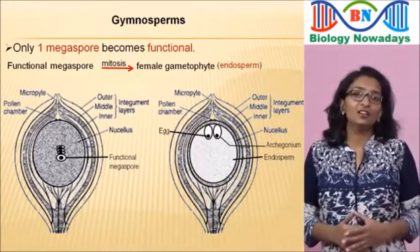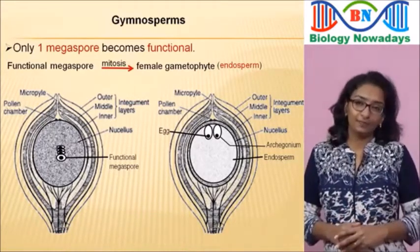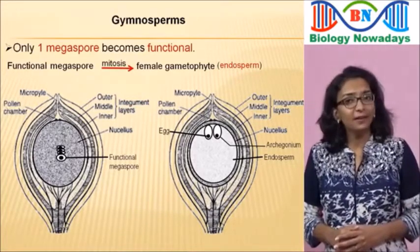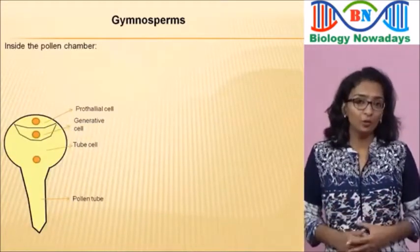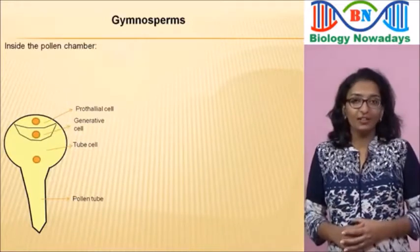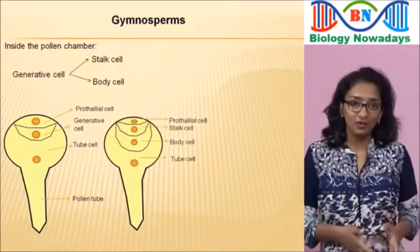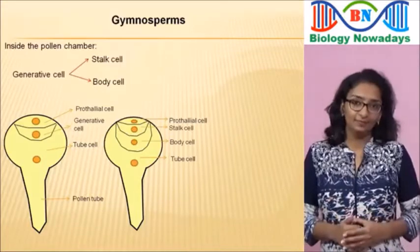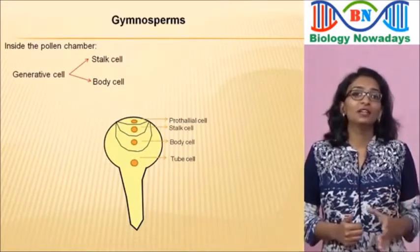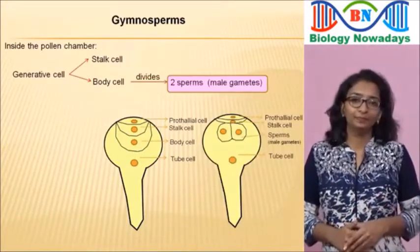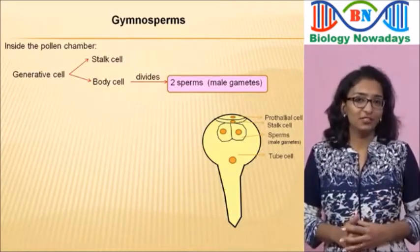Sometimes two to eight archegonia are formed by the female gametophyte. By this time, in the pollen grain inside the pollen chamber of the ovule, the generative cell divides into a stalk cell and a body cell. Finally, the body cell divides to form two sperms.